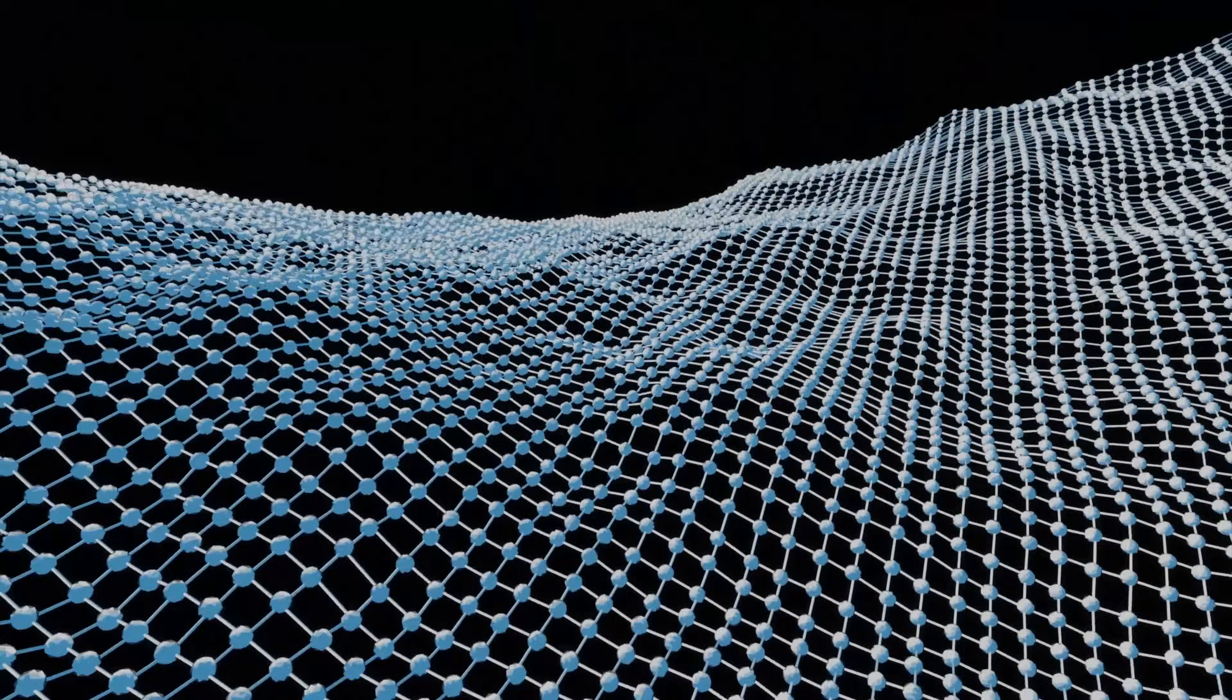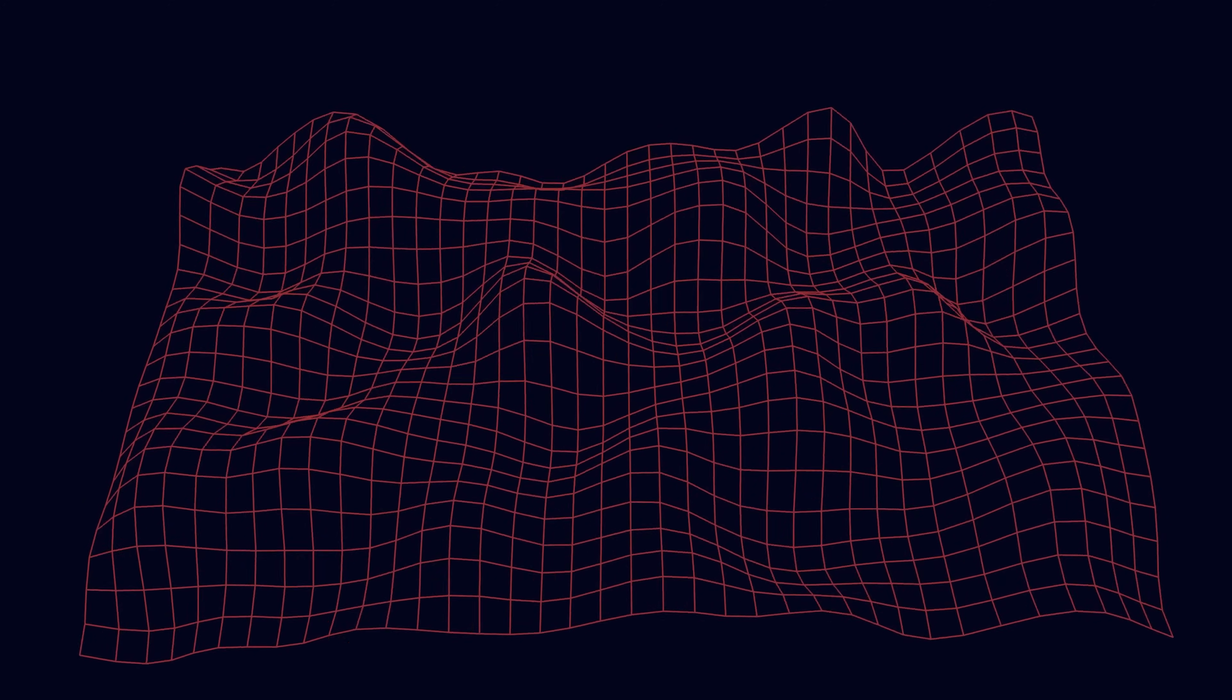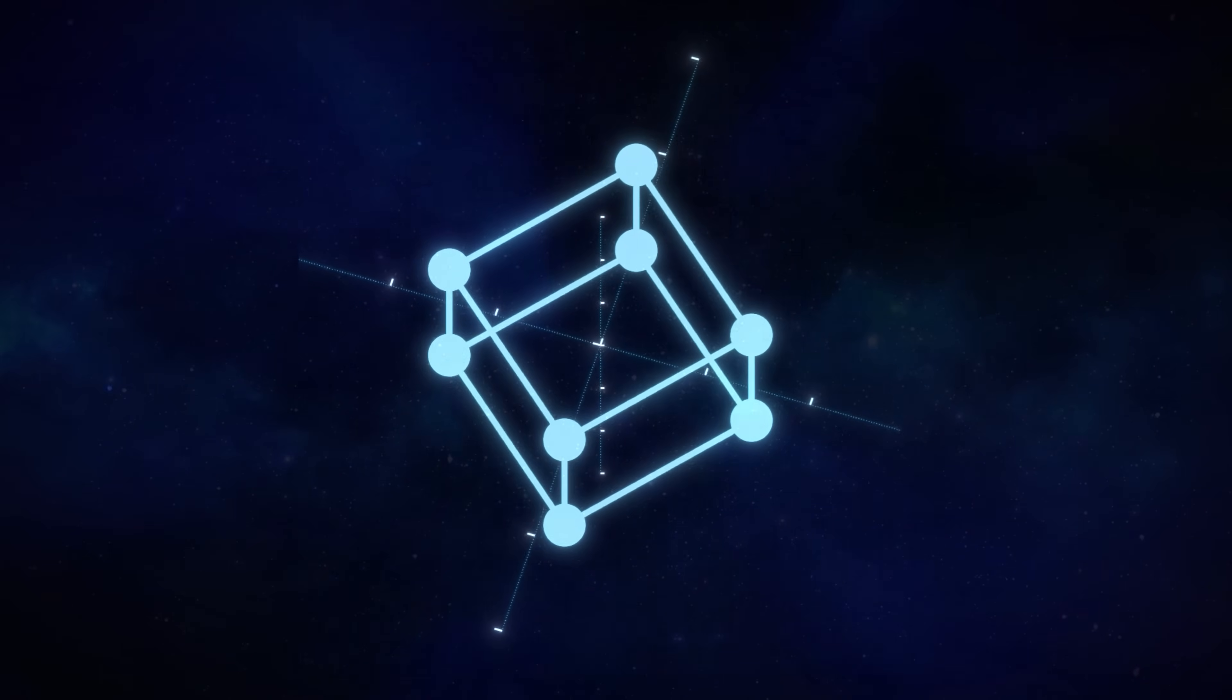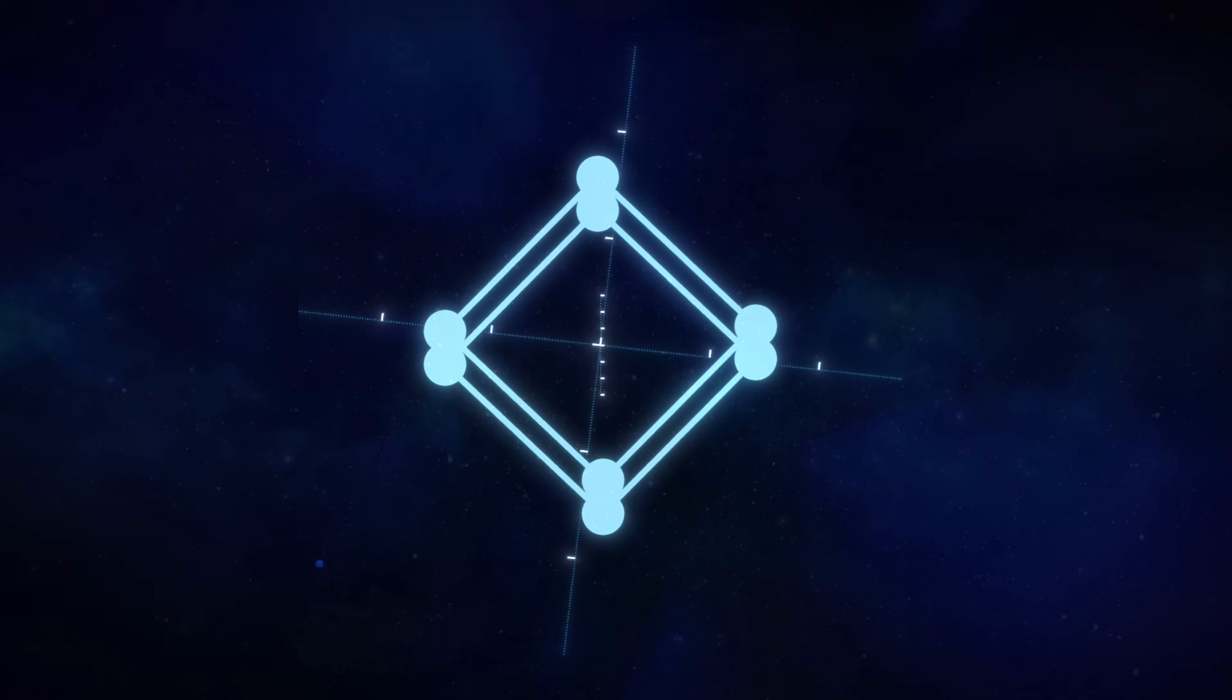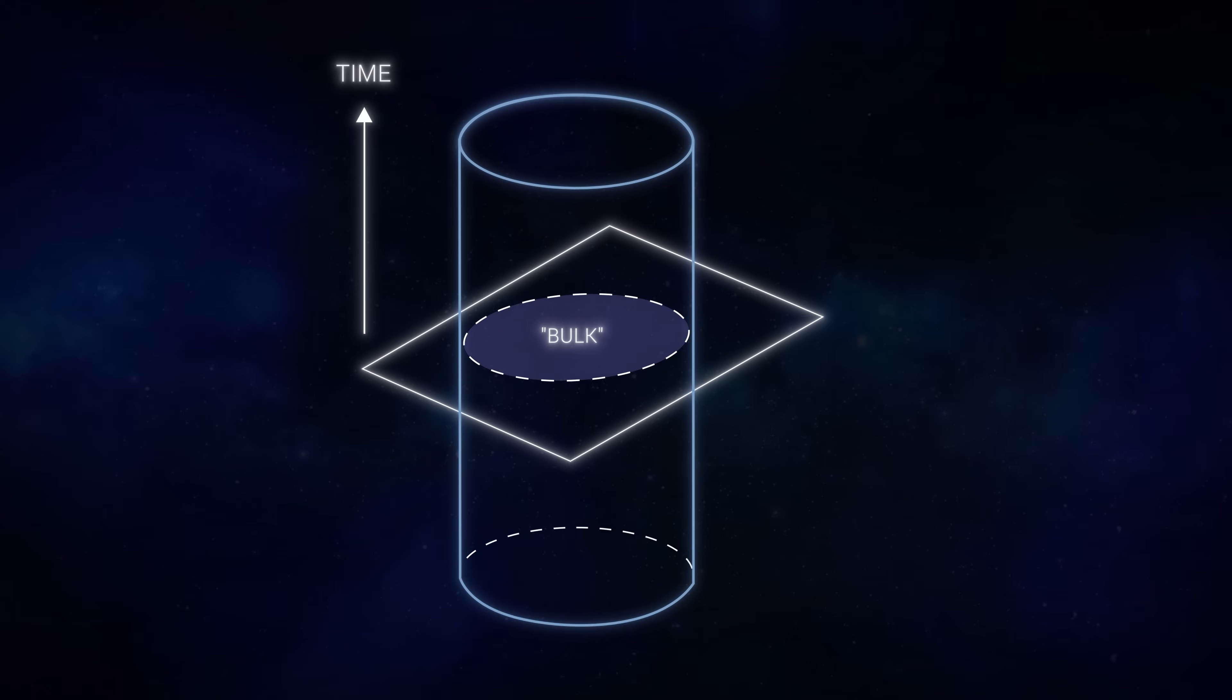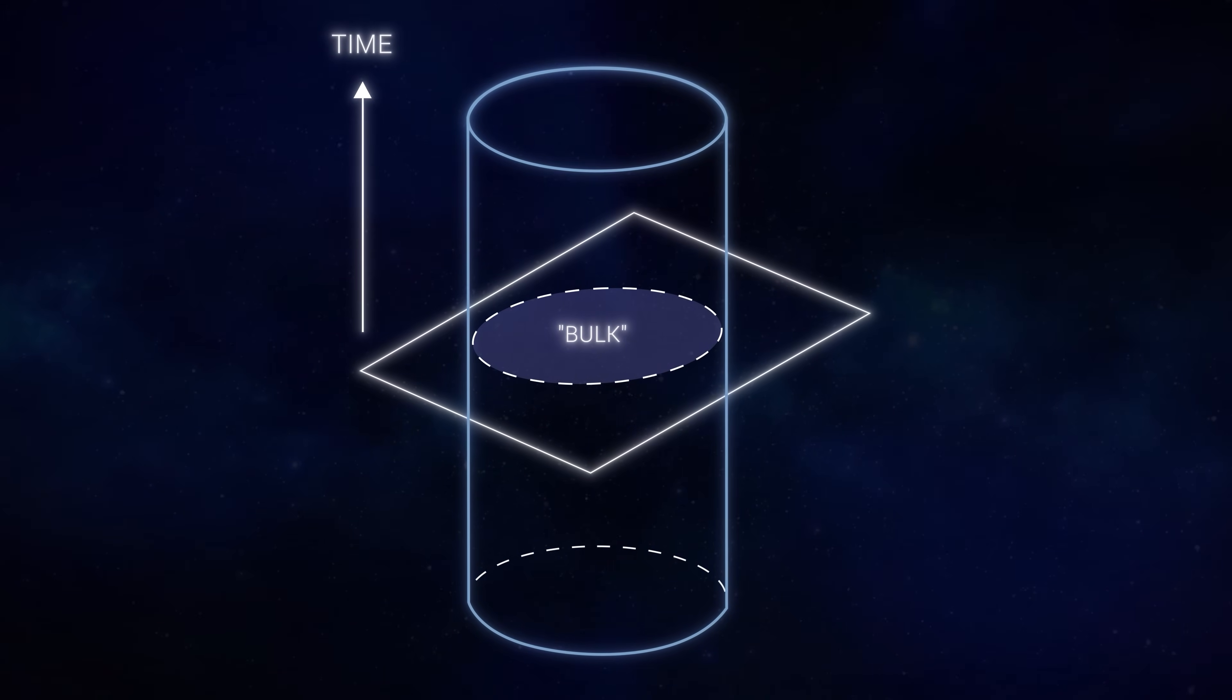Central to this dualism is conformal field theory, which operates on the boundaries of the universe within the ADS-CFT framework. CFT is unique in its scale and variance. The laws governing these field theories remain unchanged regardless of the size or scale at which they are observed. This property of CFT is key because it encodes the information needed to describe higher-dimensional bulk space within a lower-dimensional framework, effectively illustrating the holographic principle.